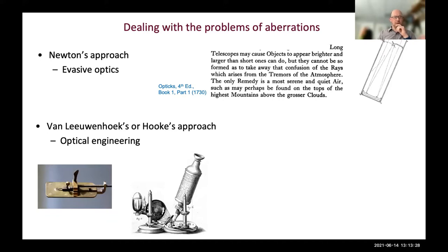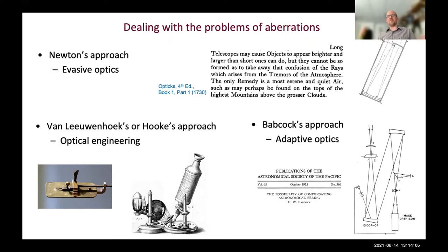The next approach is Van Leeuwenhoek's and Hux's approach - they developed microscopes with well-made optics to get the best imaging. Van Leeuwenhoek's success is allegedly due to his ability to make ball lenses far better than anybody else. If you can use optical engineering to avoid aberrations, that's definitely the way to go. The actual adaptive optics approach was first proposed in astronomical telescopes by Horace Babcock, who in 1953 proposed how one might deal with atmospheric turbulence.